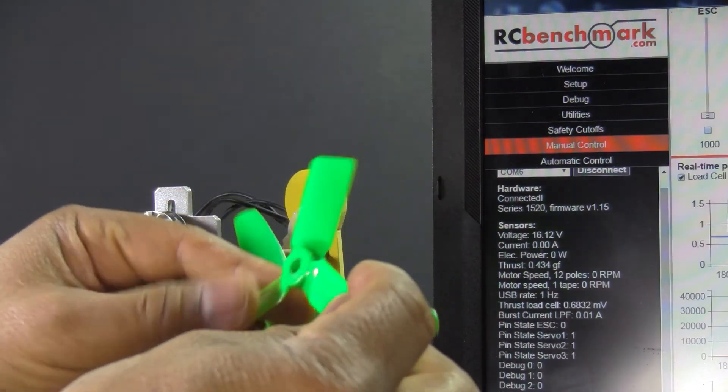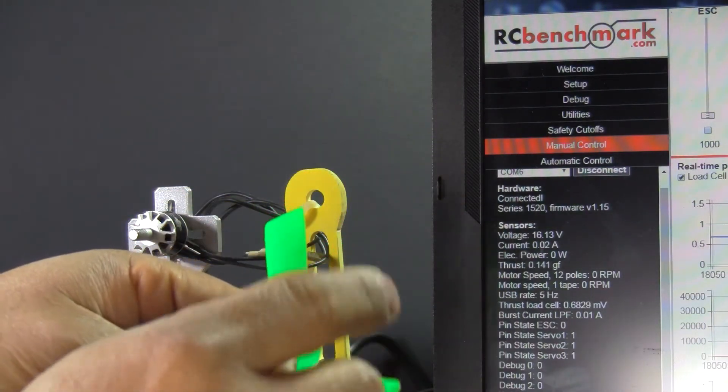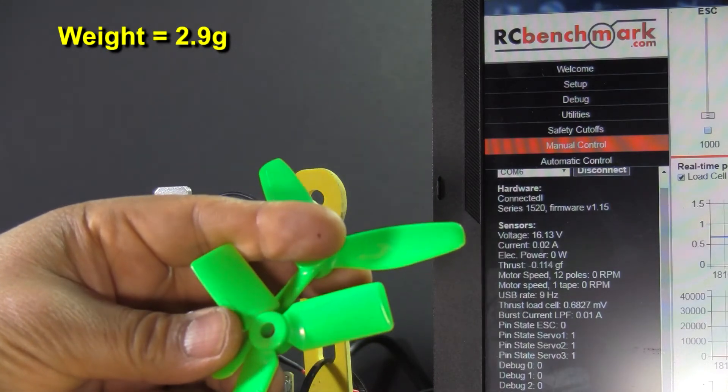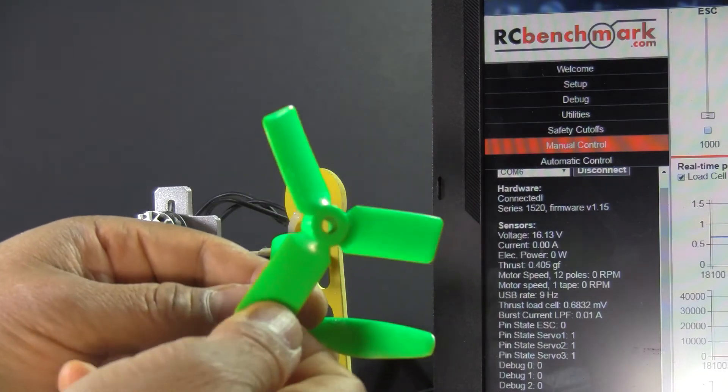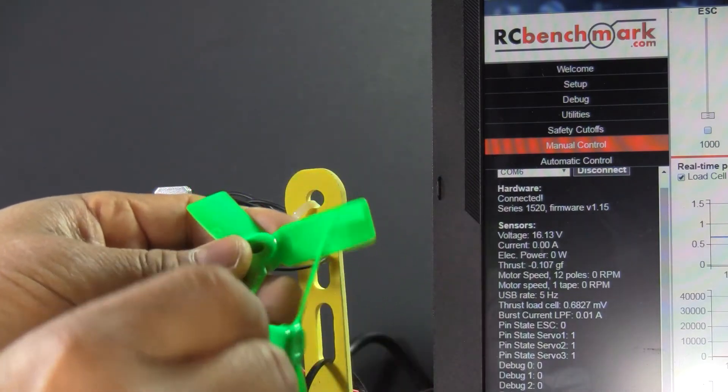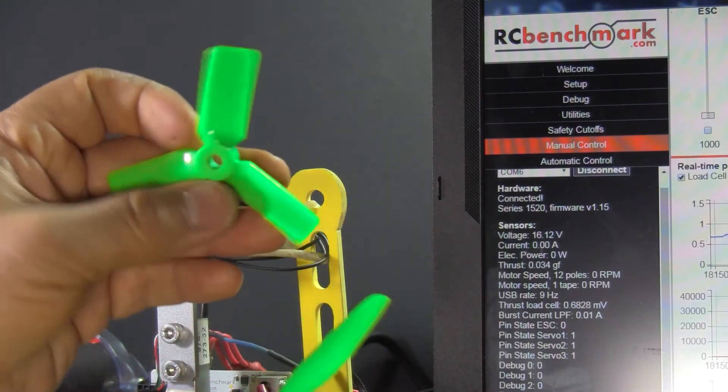Also got the 3045 version of this prop. The same DAL T3045BN. So it's pretty much the same, but cut to three inches. And that's how it comes from DAL, Surveil Zone.